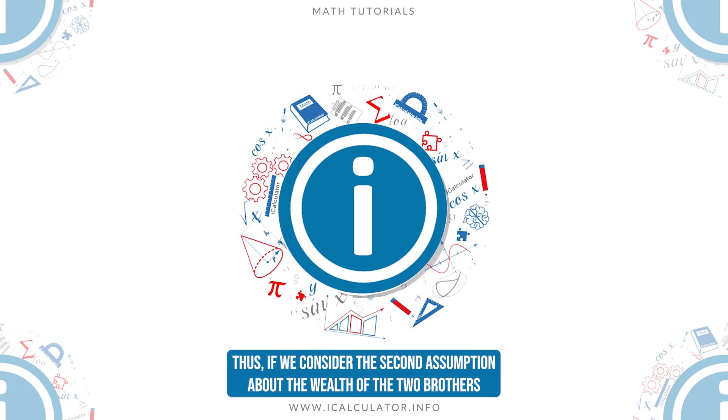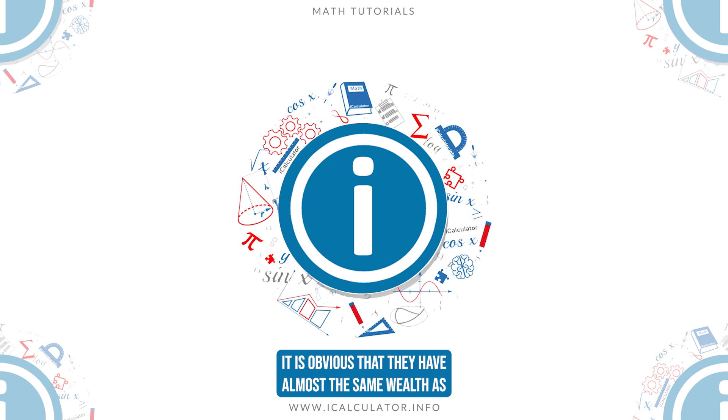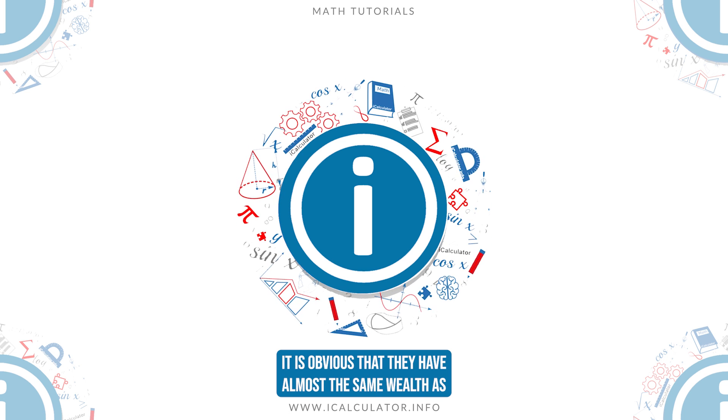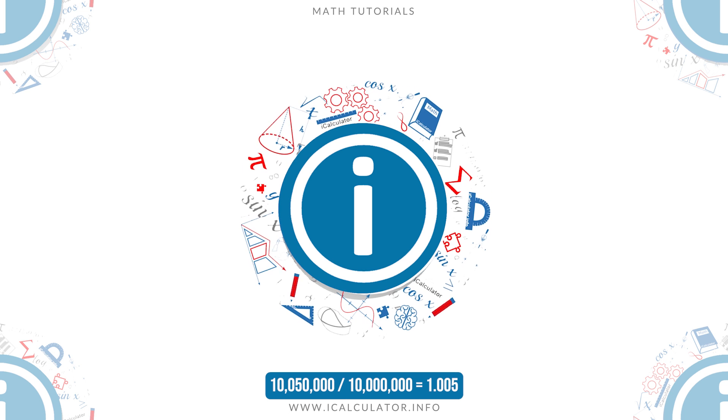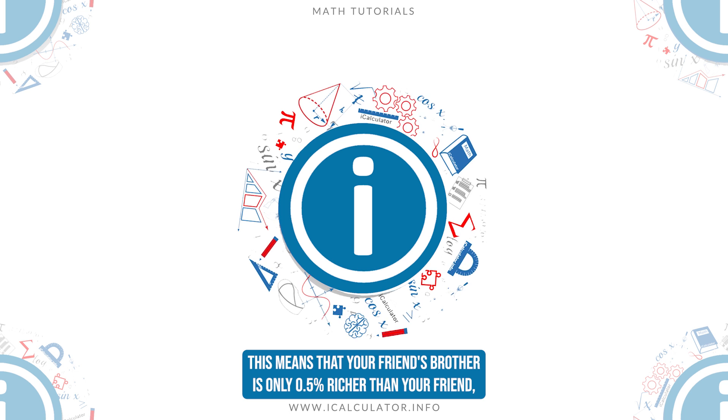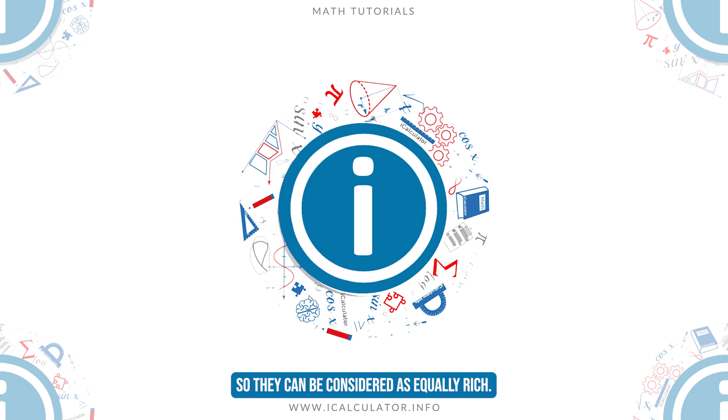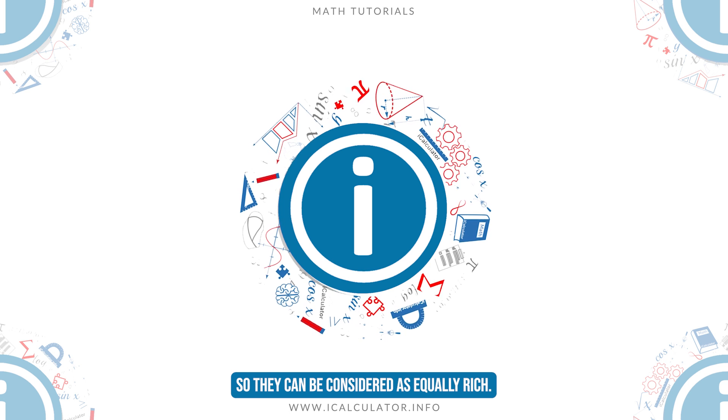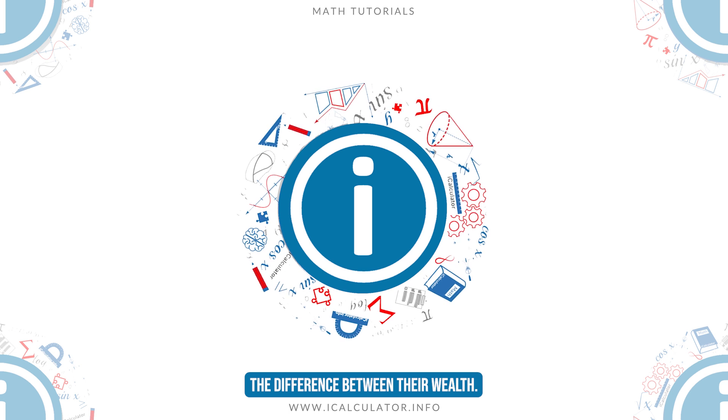Thus, if we consider the second assumption about the wealth of the two brothers discussed in the introduction, it is obvious that they have almost the same wealth as 10,050,000 divided by 10,000,000 equals 1.005. This means that your friend's brother is only 0.5% richer than your friend, so they can be considered as equally rich. This conclusion would be impossible to draw if you simply considered the difference between their wealth.